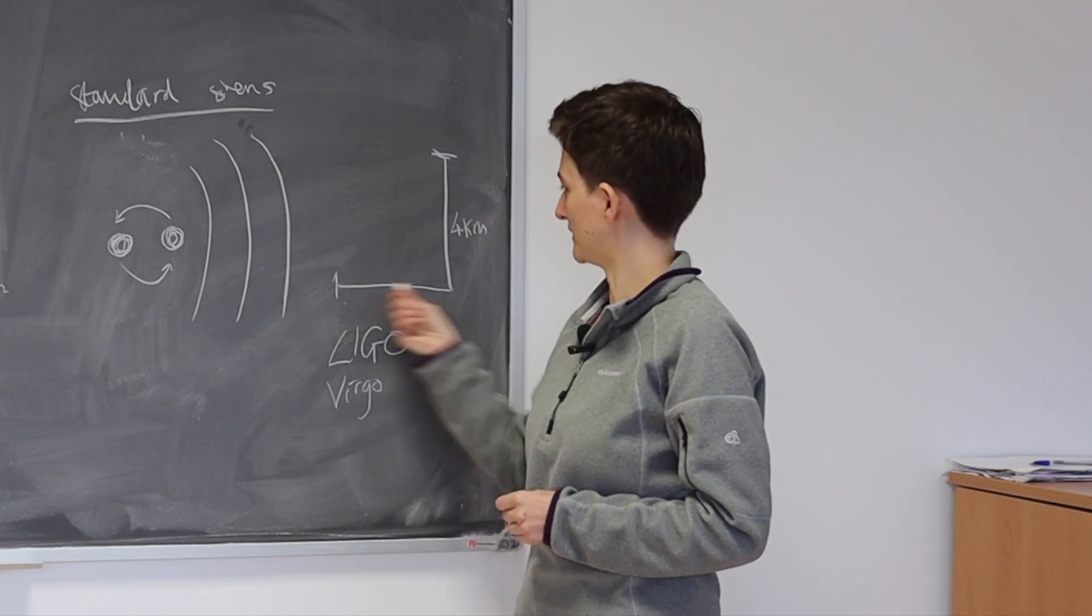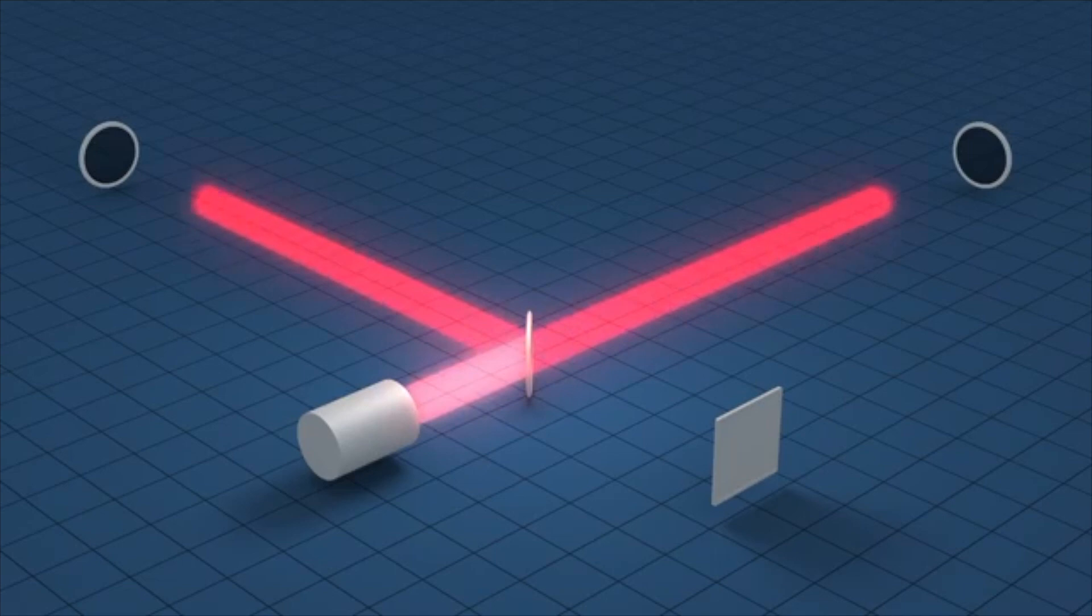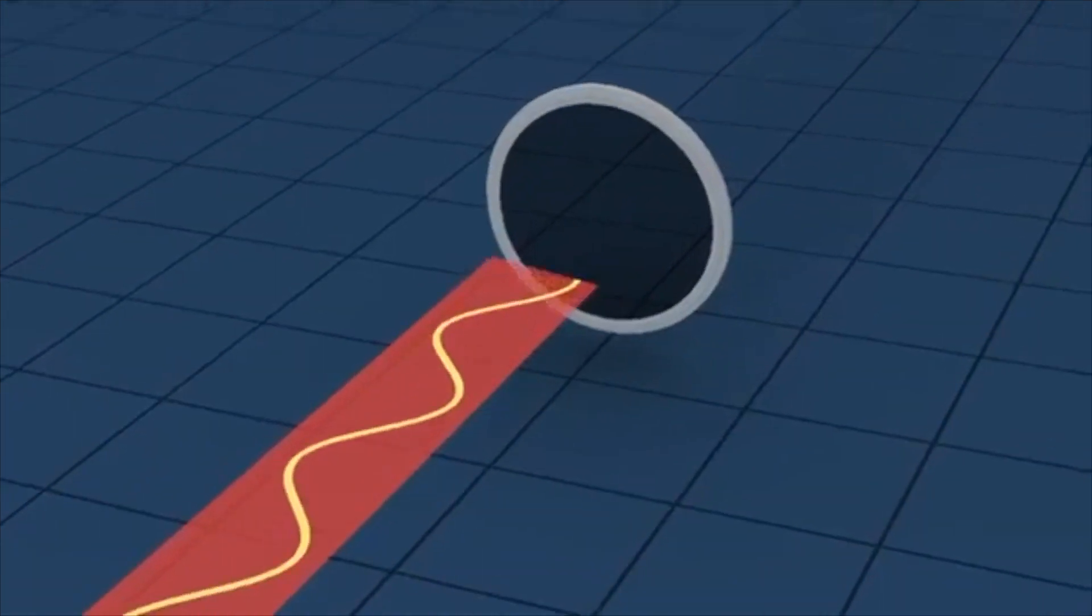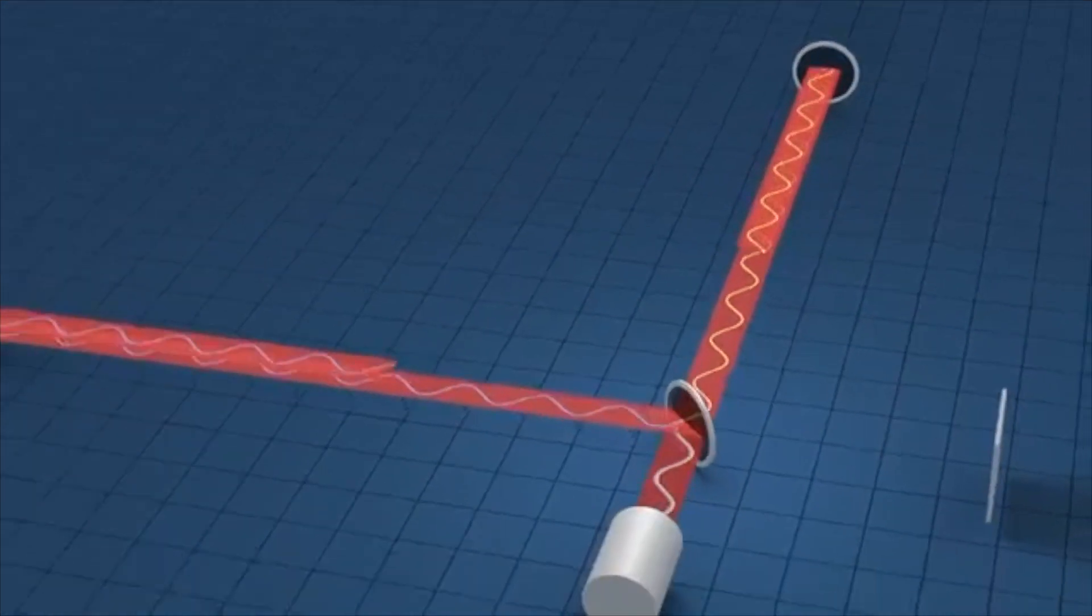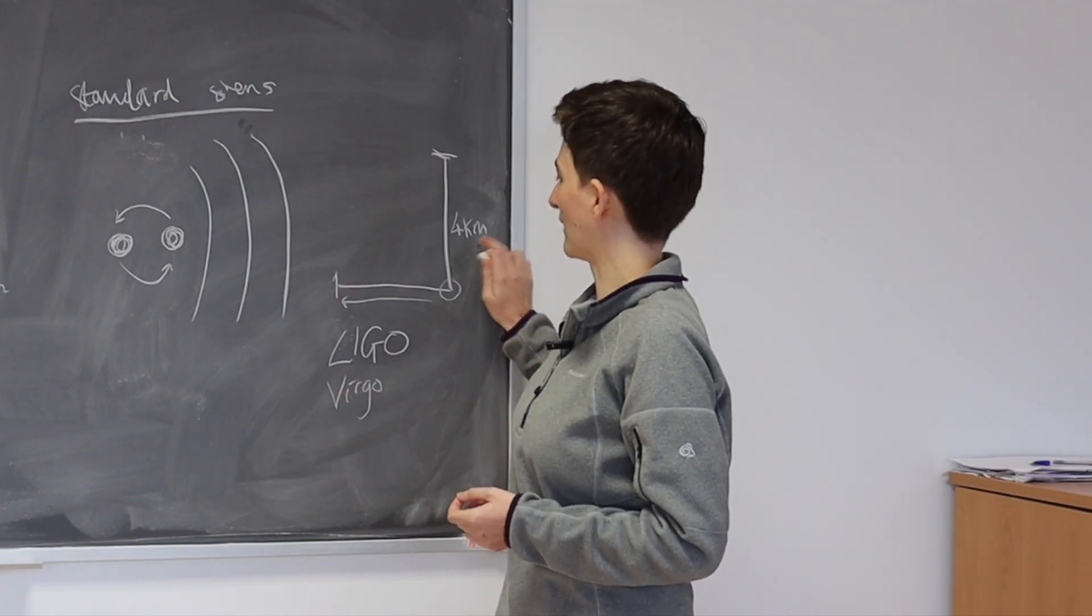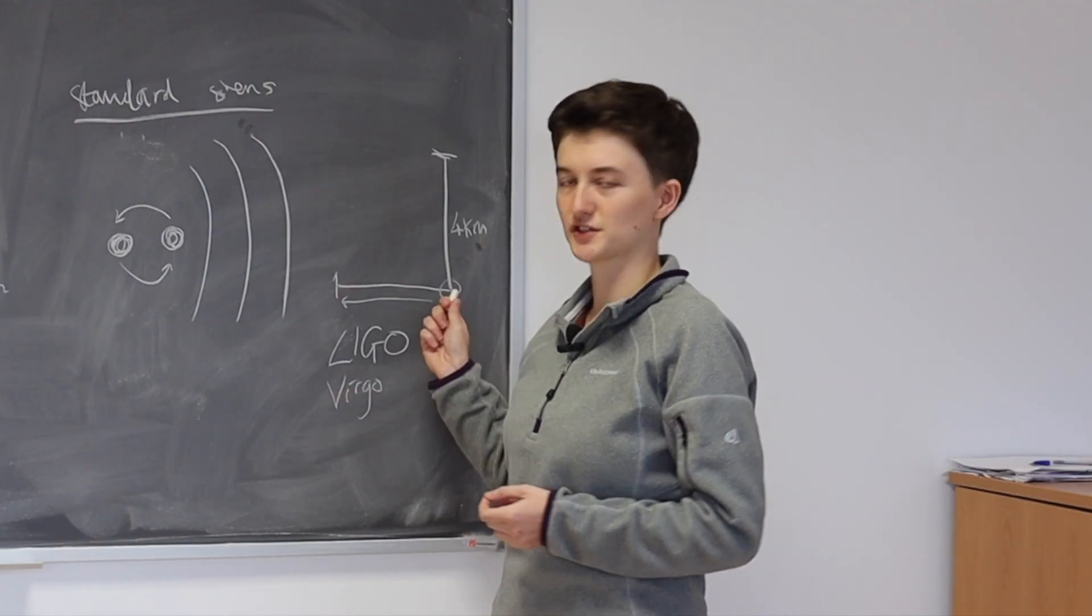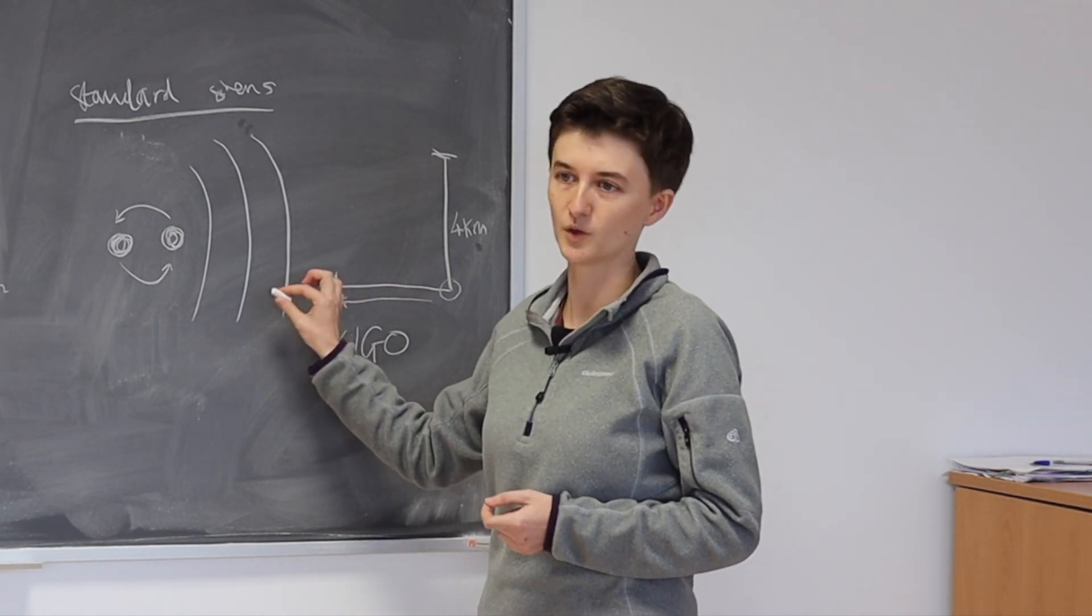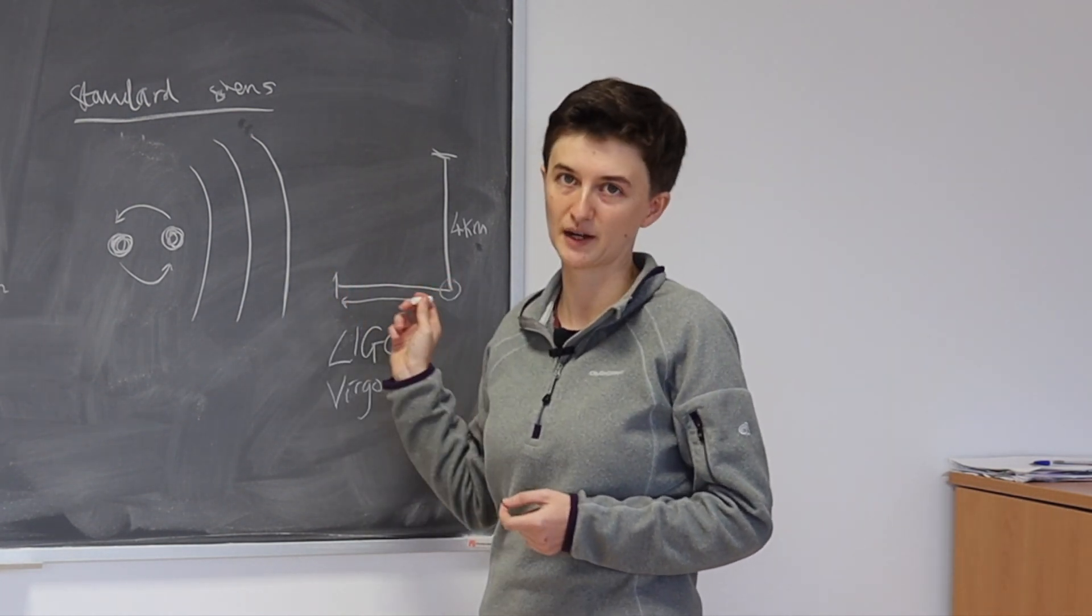So what's going on inside these detectors? So we have a detector here, and a mirror at this end, and a laser is shining light down one of the arms, it gets reflected from the mirror, and arrives back at the detector here. We know the speed of light, we know how long these arms should be, so we can just time the length of time it takes for the laser light to go to one end, reflect off the mirror, and come back again.